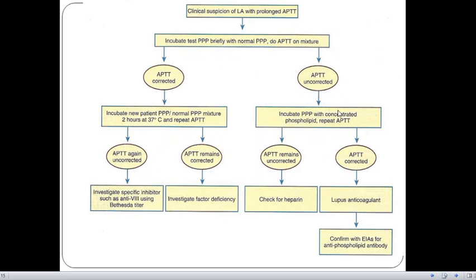The test goes on. And then, if APTT remains uncorrected, we have to check for heparin. And then, if APTT remains corrected, we have to investigate for factor deficiency. And then, if APTT is uncorrected, then we have to investigate specific factor inhibitors such as anti-factor VIII using the Bethesda titer.